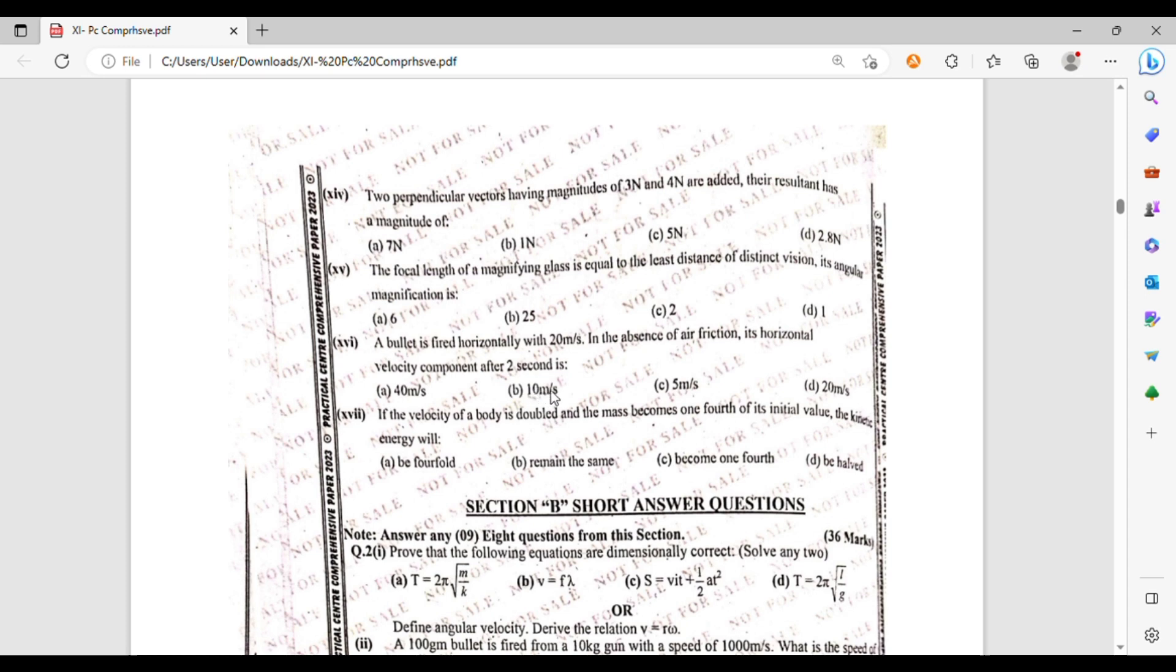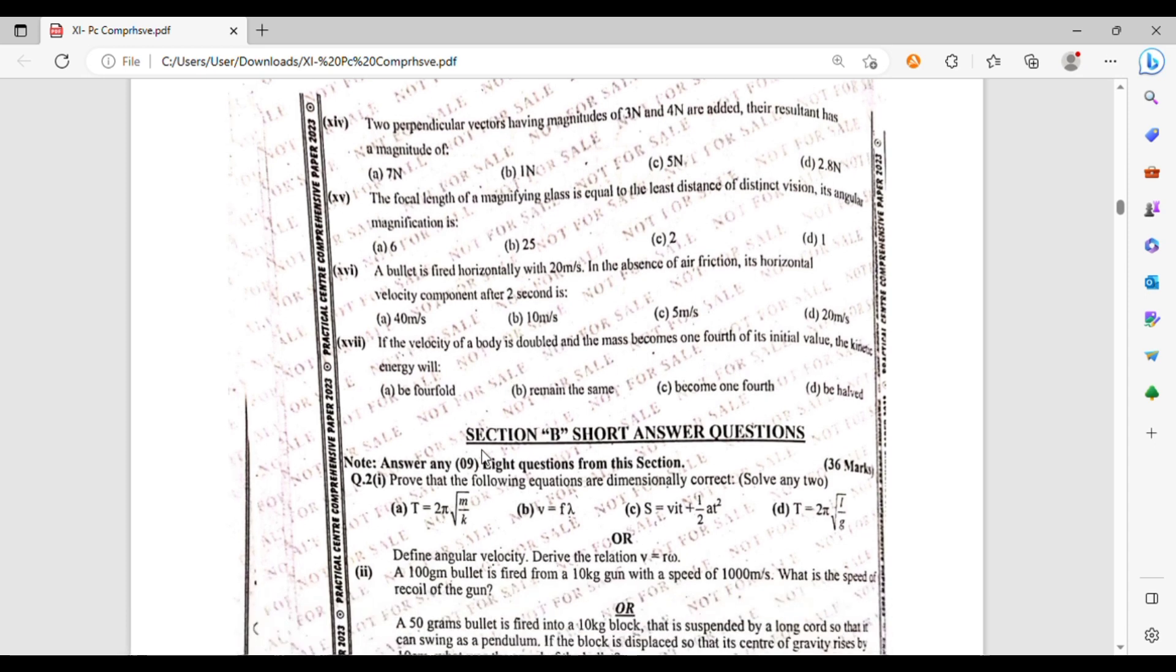If the velocity of a body is doubled and then the mass becomes 1 fourth of its initial value, the kinetic energy will be 4 times, remain the same, become 1 fourth, or be half.